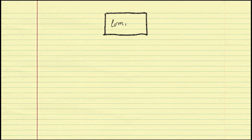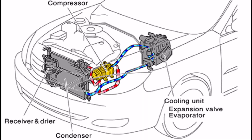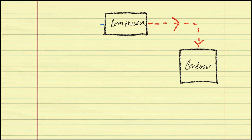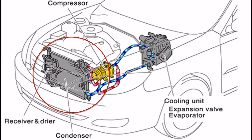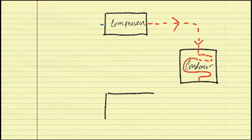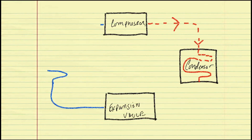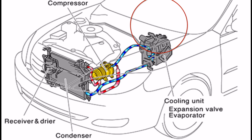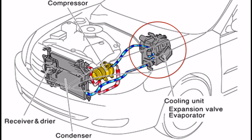Starting off with a compressor, or a pump — that's the item in yellow. Next up is the condenser, which is the part that sits in front of your radiator behind your bumper. Two more components: the expansion valve and the evaporator, which are the parts that sit inside your car in the dash.